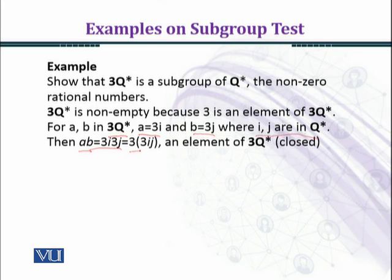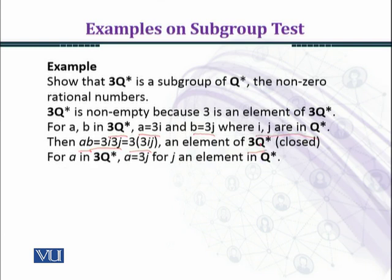And you can see that it belongs to 3Q* because it is written in the form of the elements of 3Q*. So 3Q* is closed under binary operation multiplication. Now we are left with the last condition: we have to verify that the inverse of every element of 3Q* exists in 3Q*.